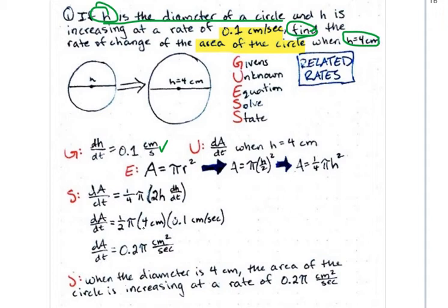But we're going to get 1/2 times pi times, well, we know that h is 4 centimeters, so we plug that in. And then we know dh/dt. We know that that is 0.1 centimeters per second, so we also plug that in.